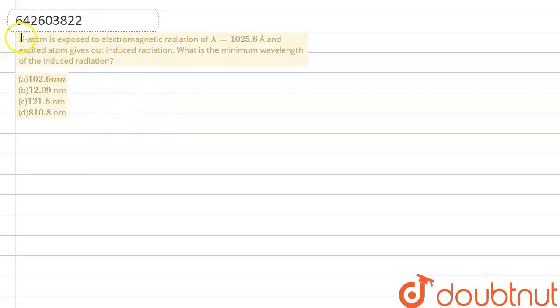Let me explain it to you. Hydrogen atom is exposed to electromagnetic radiation of lambda 1025.6 angstrom. An excited atom gives out induced radiation. What is the minimum wavelength of the induced radiation?